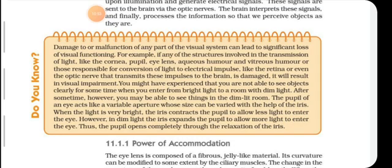Now we will discuss the defects of vision. The crystalline lens of people at old age becomes milky and cloudy — this condition is called cataract. This causes partial or complete loss of vision. It is possible to restore vision through cataract surgery.